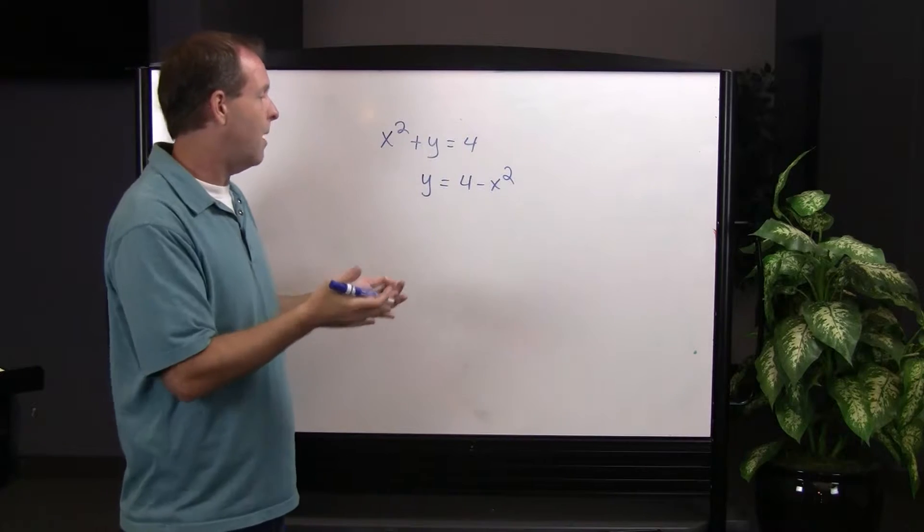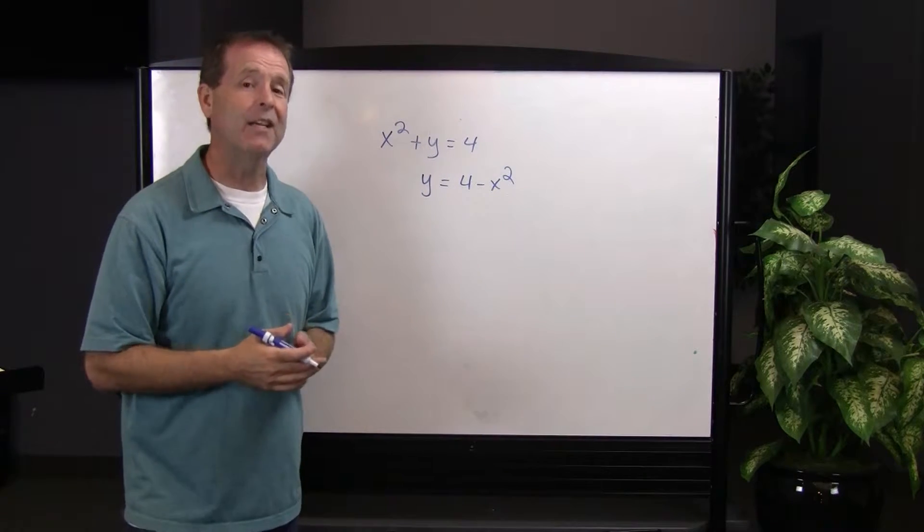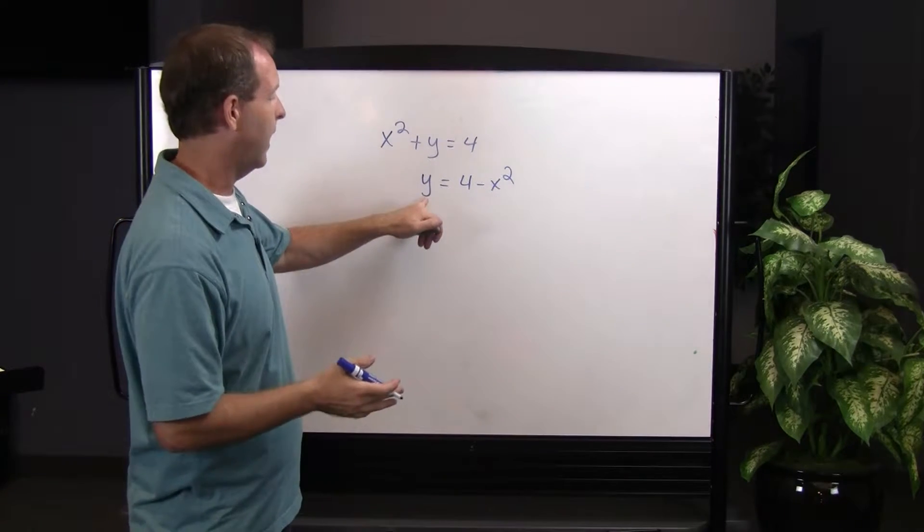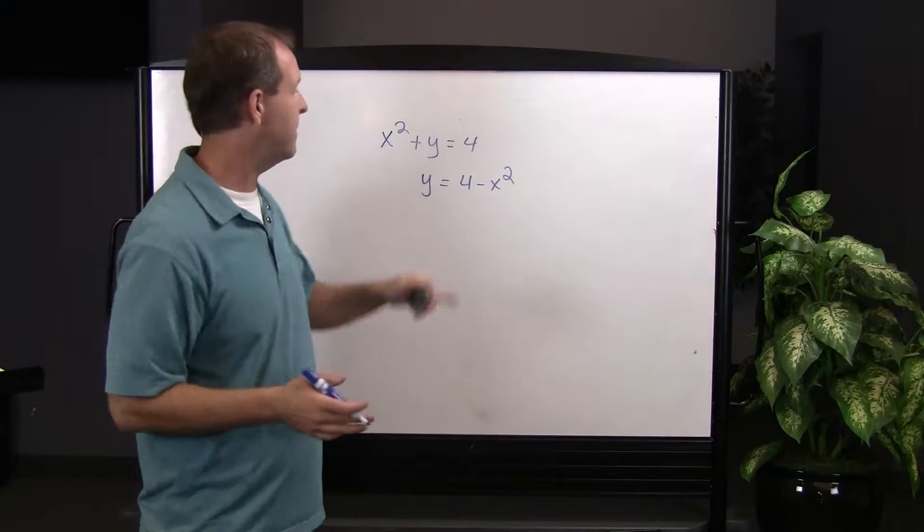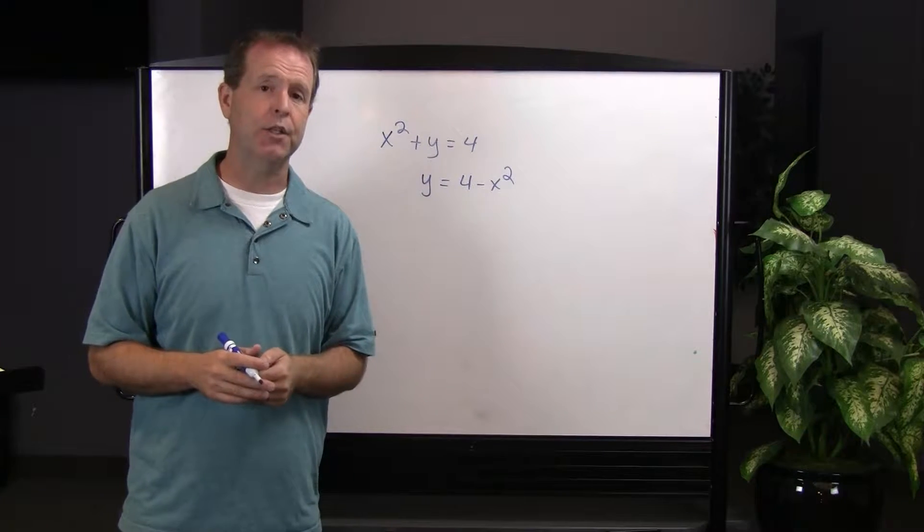And performing one operation, I see that I get one solution for y: y equals 4 minus x squared. Therefore, I can determine that this original equation is indeed a function.